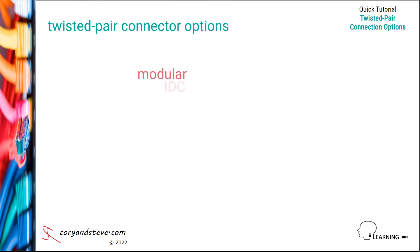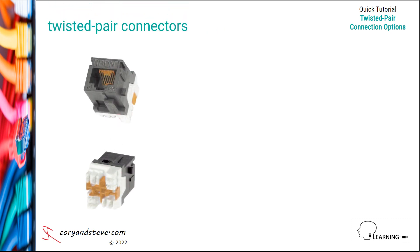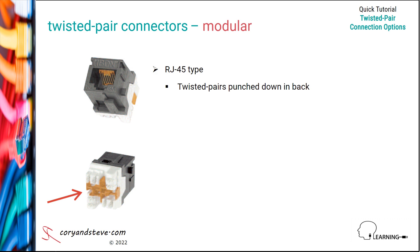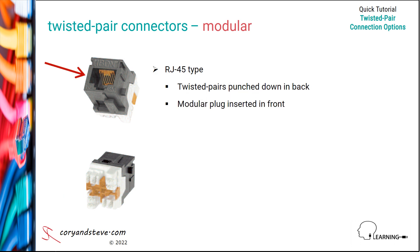Let's now take a look at the options for twisted pair connectors. The most common type of twisted pair connector is the modular or RJ45 type, where we punch down the twisted pairs of a cable or pigtail in the back of the connector and insert a modular plug in the front.